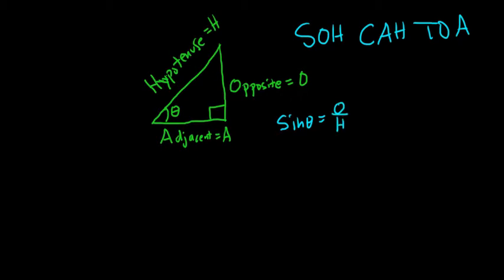Opposite over hypotenuse. That means that the reciprocal function, which is cosecant of theta, it's HO. So H over O.